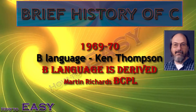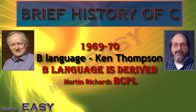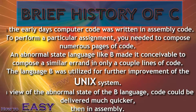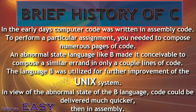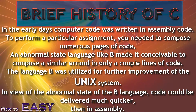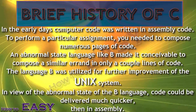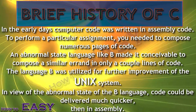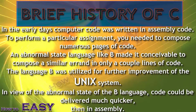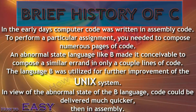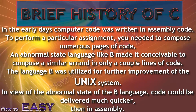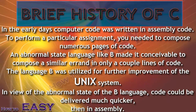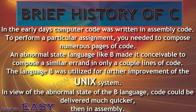The B language is derived specifically from Martin Richards' BCPL. In the early days, computer code was written in assembly code. To perform a particular task, you needed to compose numerous pages of code. A high-level language like B made it possible to write the same functionality in only a couple lines of code. The language B was utilized for further improvement of the Unix system, and code could be delivered much quicker than in assembly.